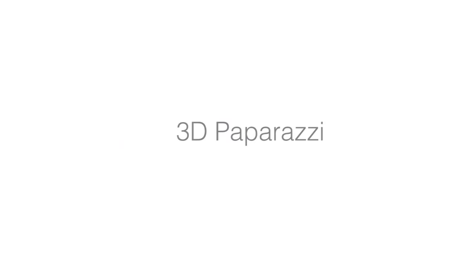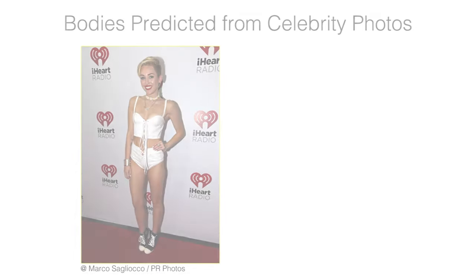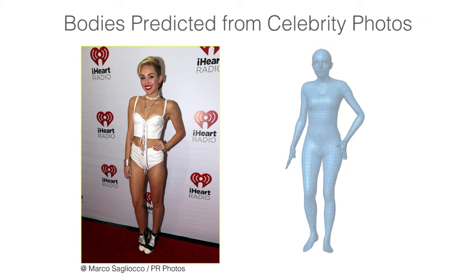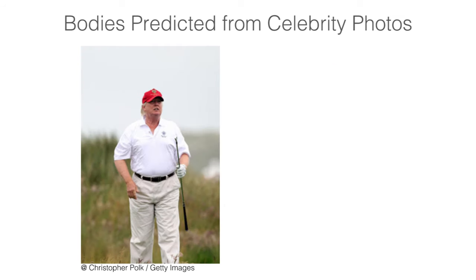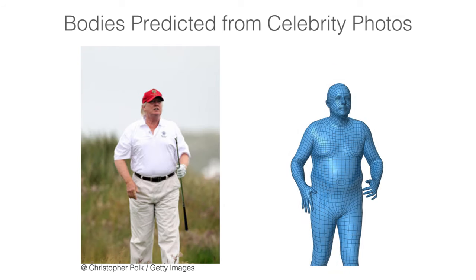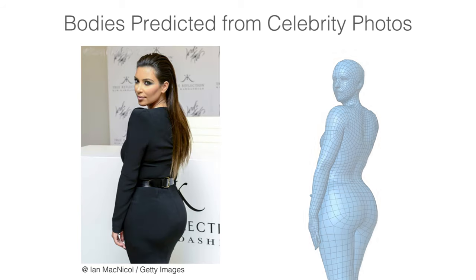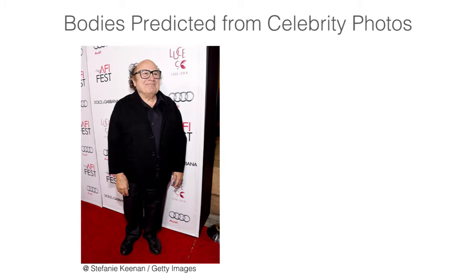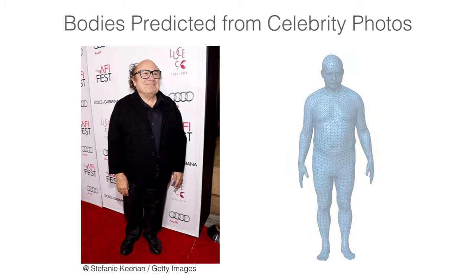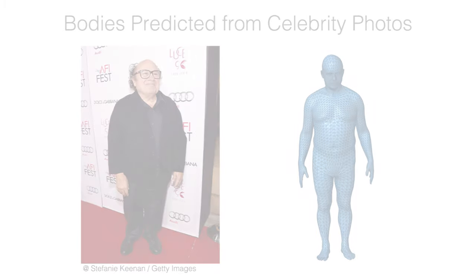We can now make avatars of our favourite celebrities and world leaders. Here we show crowd-shaped bodies created from ratings of photos. Note that sports figures and some celebrities, by definition, have bodies that are special — these bodies might not be well represented by the first eight principal components of SMPL.